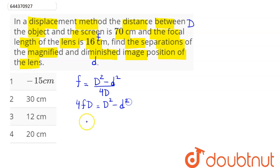Therefore, d² = D² - 4fD, and d = √(D(D - 4f)).